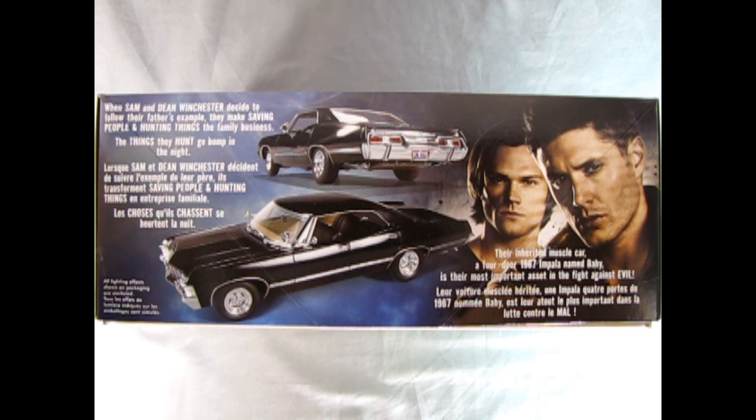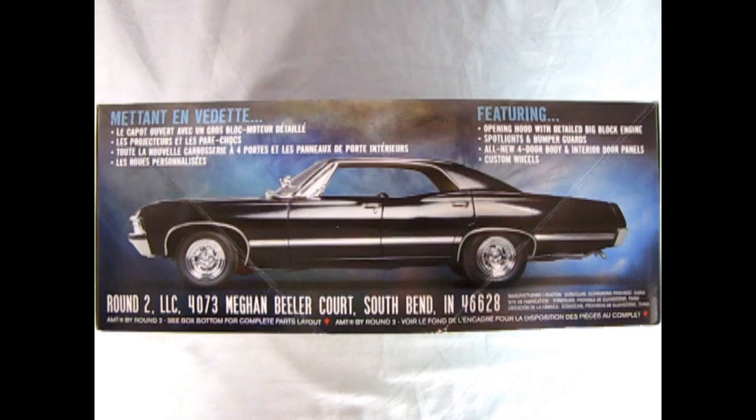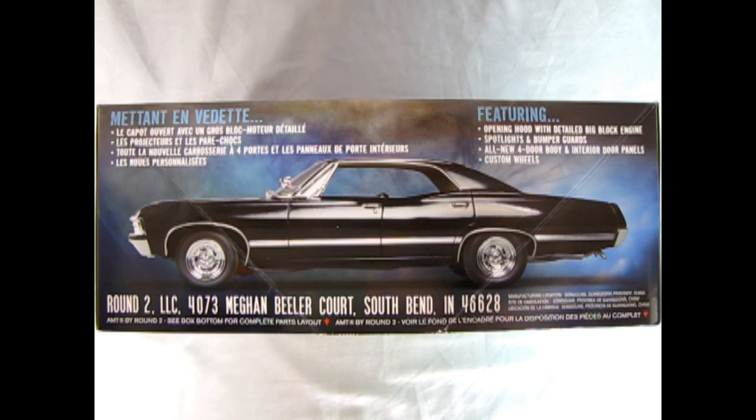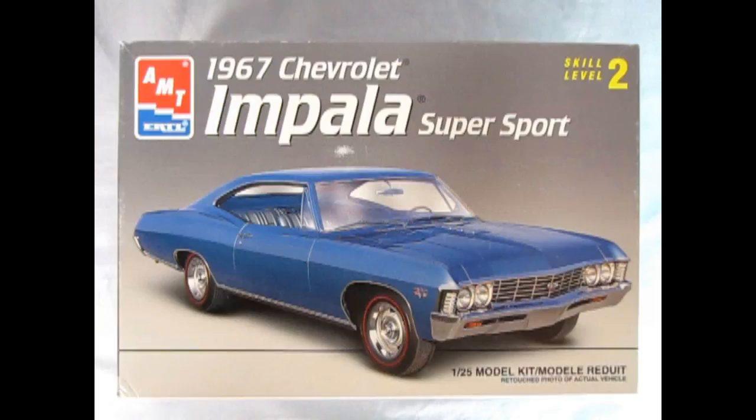The things they hunt go bump in the night. Their inherited muscle car, a four-door 67 Impala named baby, is their most important asset in the fight against evil. Featuring opening hood with detailed big block engine, spotlights and bumper guards, all new four-door body and interior door panels, custom wheels. This model kit is a retooled version of AMT Ertl's 1967 Chevrolet Impala Supersport which came out in 1997.